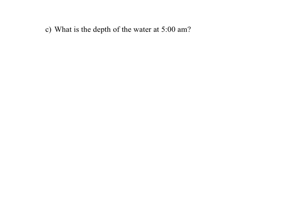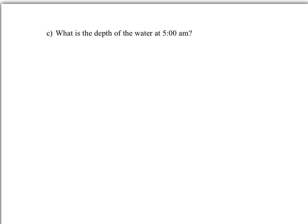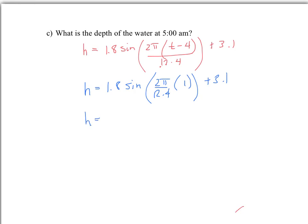So, our equation was h, oops, I want a pencil, h is equal to 1.8 sine, this is 2 pi this is t minus 4, I'm not going to write the .00, divided by 12.4, and then plus 3.1. So the information I'm giving you is the time at 4 a.m., sorry, 5 a.m., so I'm going to replace t with 5, so if I replace t with 5, I have 1.8 sine of 2 pi over 12.4. This, notice that if I replace t with 5, this is 5 minus 1, or sorry, 5 minus 4, which gives you 1, plus 3.1.